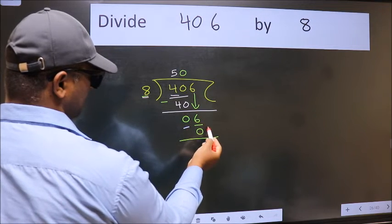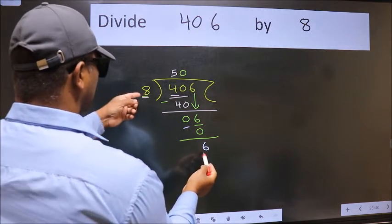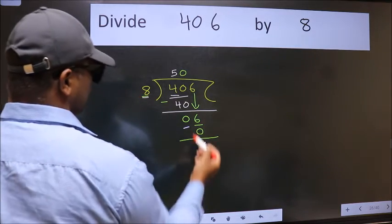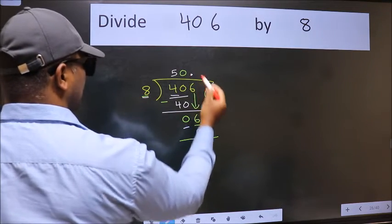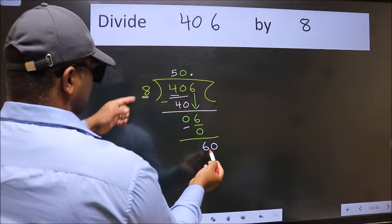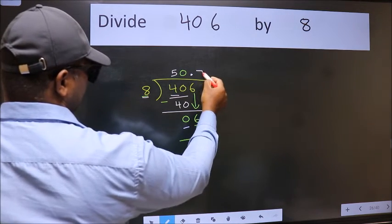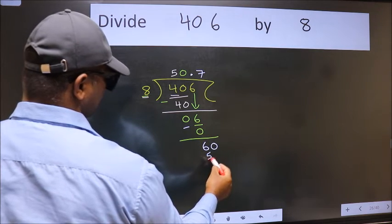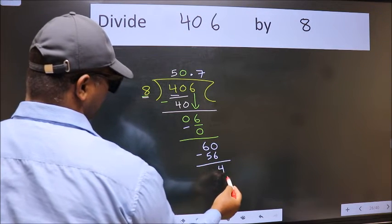Over here we did not bring any number down, and 6 is smaller than 8, so now we can put dot and take 0. So 60, a number close to 60 in 8 table is 8 sevens 56. Now we subtract, we get 4.